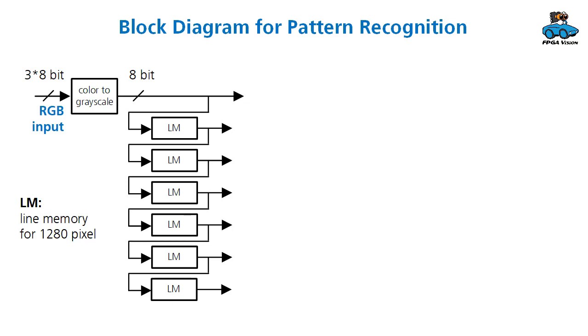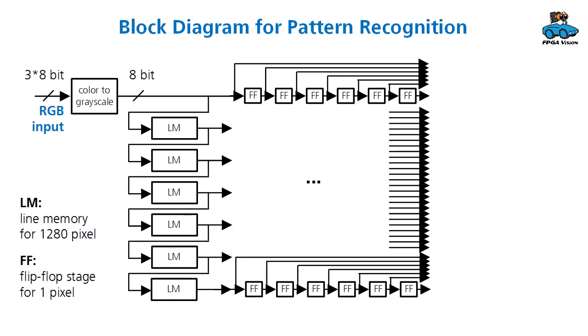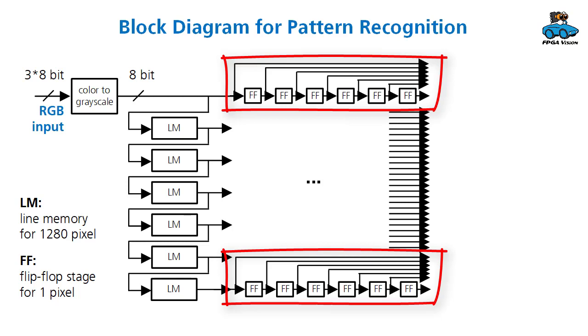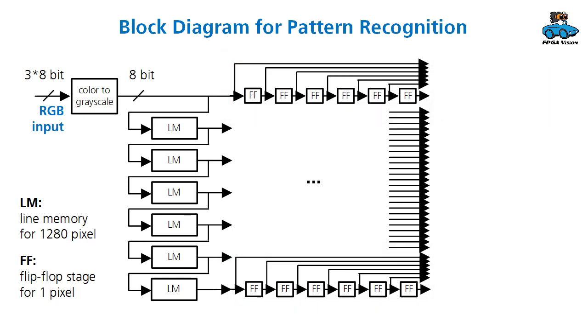Then we have our input pixel and we delay it with 6 line memories by 1280 pixels each so that we get 7 pixels that are above each other. In the next step we delay each of these 7 lines with 6 flip-flops so that we get the current pixel plus 6 previous pixels, 7 pixels in total. And we get a region of 7 by 7 pixels, so 49 pixels. This is quite a lot, but this is what an FPGA is good at.